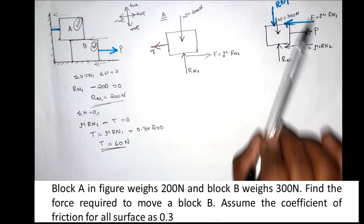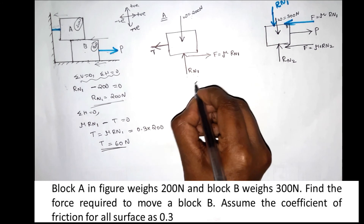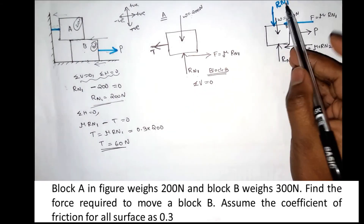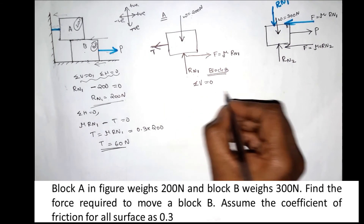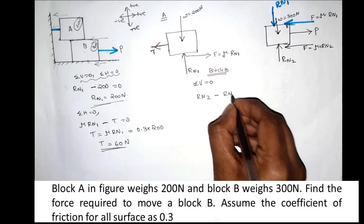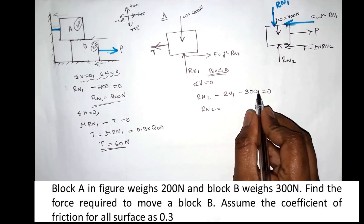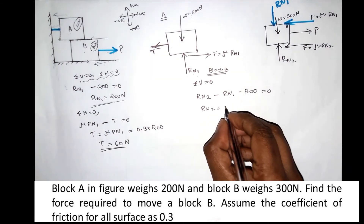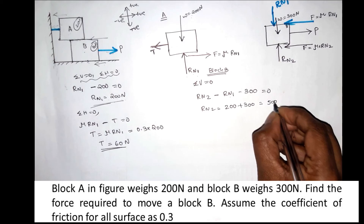We now apply the equilibrium equations to Block B. First, Sigma V equals 0. The vertical forces are Rn2 (upward), Rn1 (downward), and W equals 300N (downward). So Rn2 minus Rn1 minus 300 equals 0, giving Rn2 equals Rn1 plus 300 equals 200 plus 300 equals 500N.